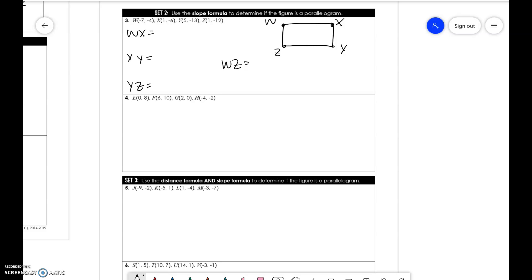To find the slope, you're doing Y1 minus Y2 over X1 minus X2. You get this slope to be negative 1 over 4, negative 7 over 4, negative 1 over 4, and negative 1. This is not a parallelogram because XY and WZ are not the same slope.